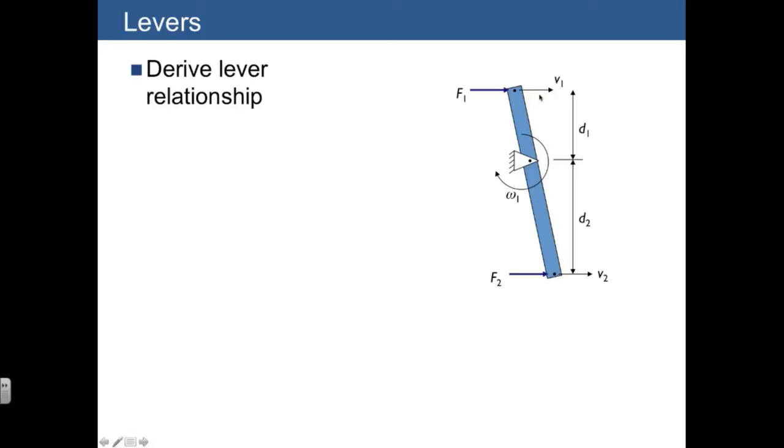Instead, the shared displacement that we're interested in is actually the rotation. So both ends of the lever share in the same rotation, which is described simply from V1 is equal to omega-1 times D1, and V2 is equal to negative omega-1 times D2. So we have two equations, and we can actually divide one by the other. So that gives us the ratio V1 over V2 is equal to negative D1 over D2.